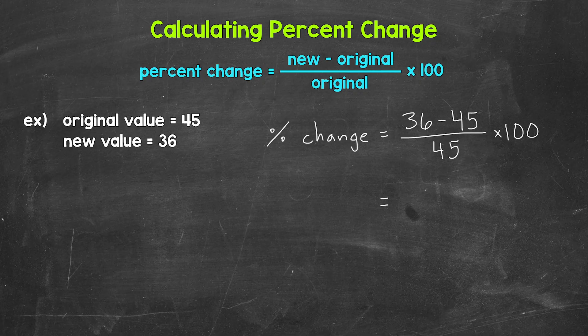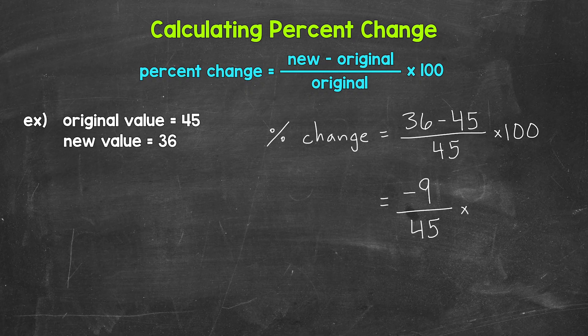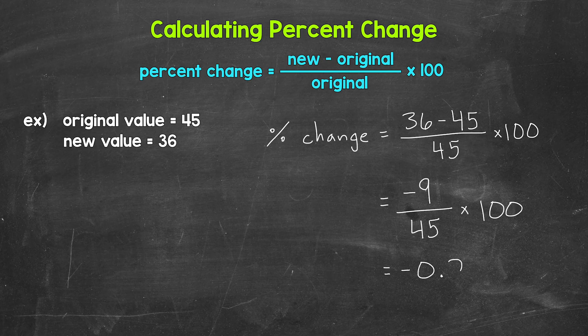36 minus 45 gives us negative 9. And that negative tells us we have a decrease here. If we end up with a positive, that tells us we have an increase. So we have negative 9 over 45 times 100. We decreased by 9 over the original value of 45.